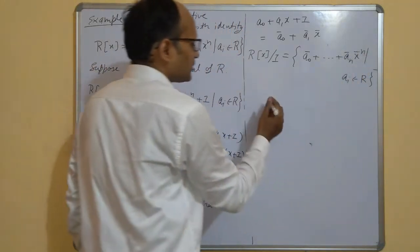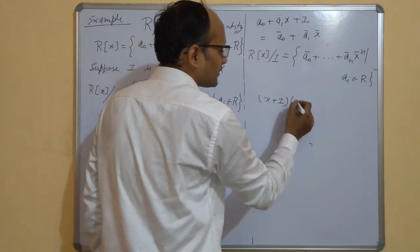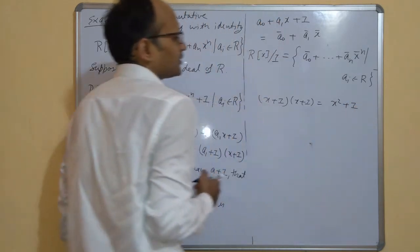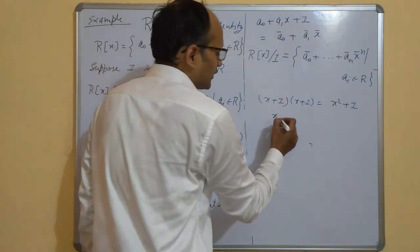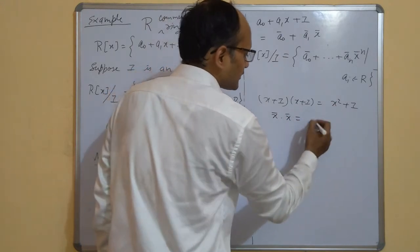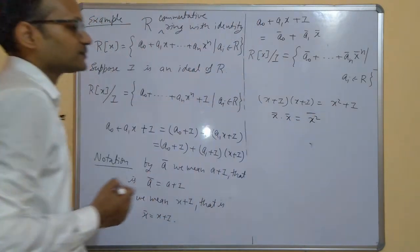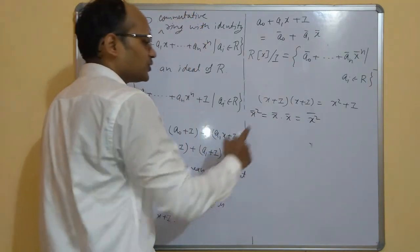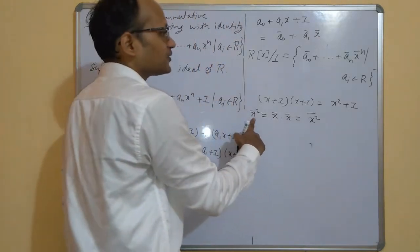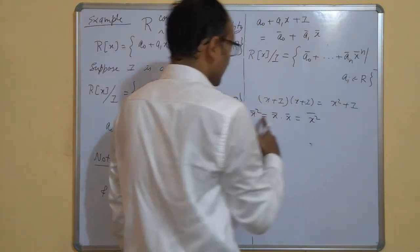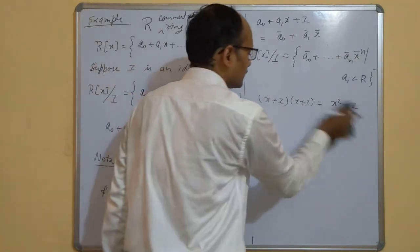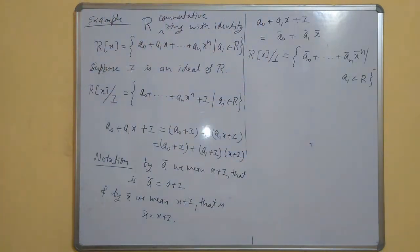Why is it x̄ to the power n? Because if we multiply (x + I)(x + I), it becomes x² + I. So x̄ · x̄ is just x̄², and x̄² is the same as (x²)bar. Both are the same thing. Similarly, for any power n, we can write x̄ⁿ.